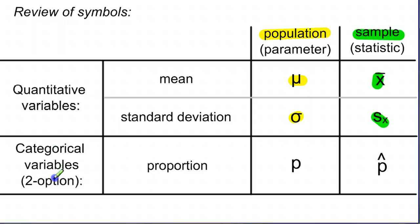Down here with categorical, whenever you have two options such as yes, no, true, false, questions like that, and you're finding a proportion, what percent said true, what percent said yes, like we did in that last example, our population value is p for the proportion. And our sample statistic for proportion is p hat.